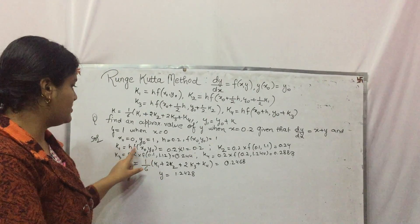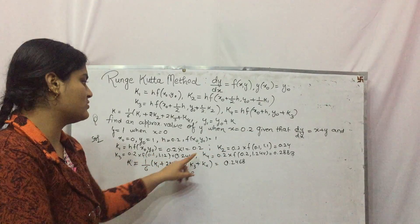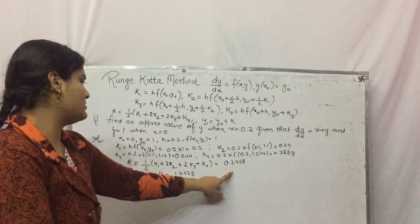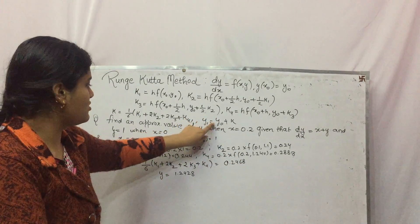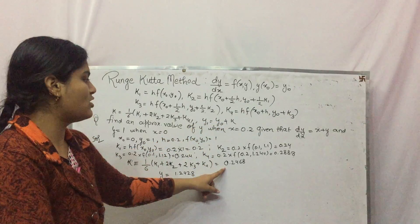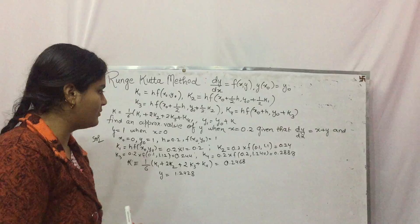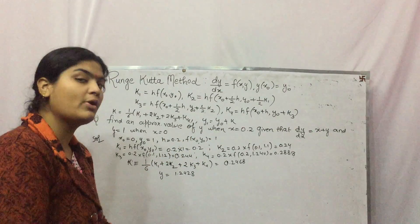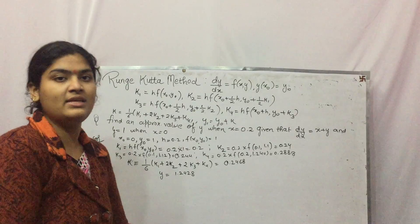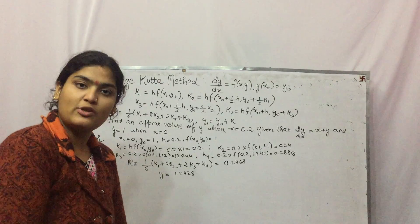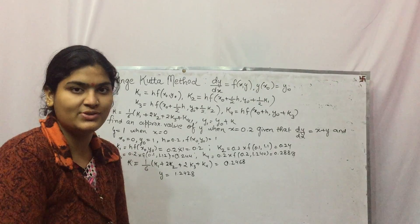K = (1/6)(K1 + 2·K2 + 2·K3 + K4), where K1 = 0.2. Substituting all values, K = 0.2468. So y₁ = y₀ + K = 1 + 0.2428 = 1.2428. This is the particular solution for the differential equation. I hope you understand — in this way you can solve any ordinary differential equation. We'll discuss more in the next class. Thank you and don't forget to subscribe.